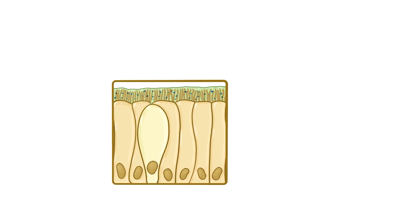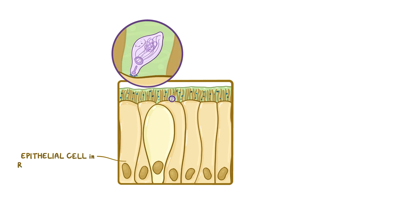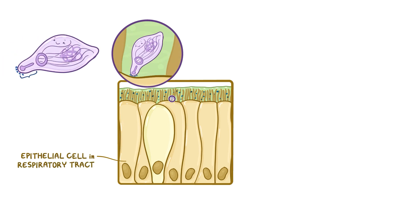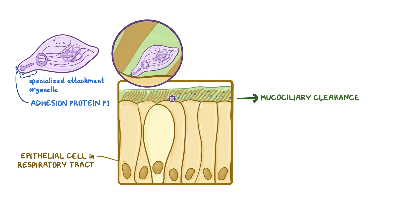Following inhalation of the pathogen droplets, mycoplasma pneumoniae attaches to an epithelial cell in the respiratory tract using a specialized attachment organelle, which has an adhesive protein complex called adhesion protein P1 at its tip. Adhesion protein P1 attaches to the host cell surface, like the respiratory epithelial cell, and holds on for dear life. This makes it way harder for the mucociliary clearance mechanisms, which normally remove any foreign pathogen out of the respiratory tract, to clear the bacteria.